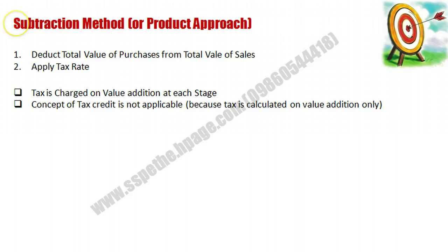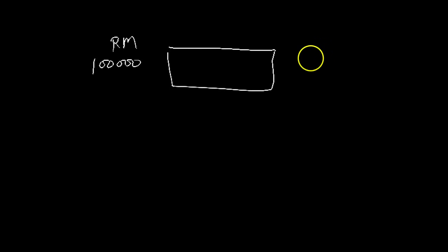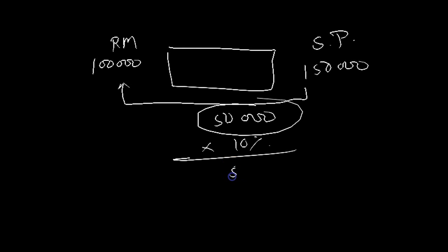Next is the subtraction method, also called the product approach method. In this method, we deduct the total value of purchases from the total sales value and apply the tax rate. For example, suppose you purchased raw material for 1 lakh rupees, and after processing, the sale price of the final product is 1 lakh 50,000. The difference is 50,000.